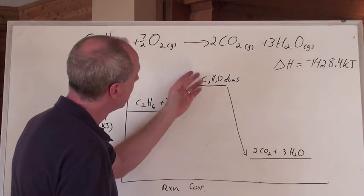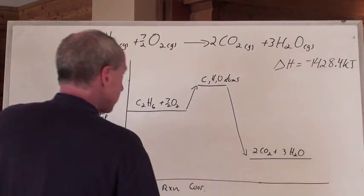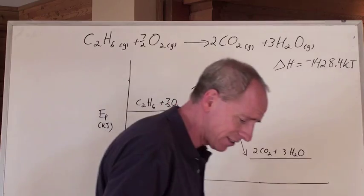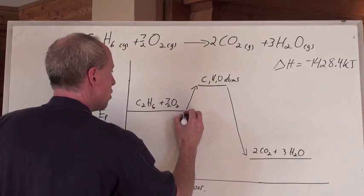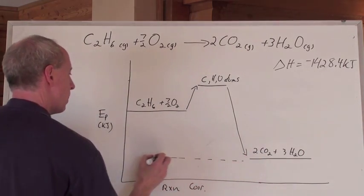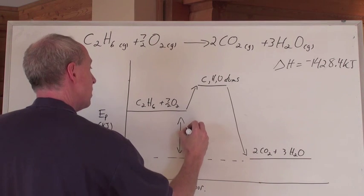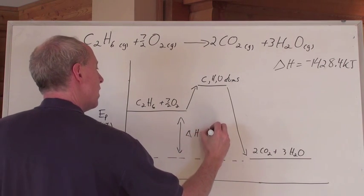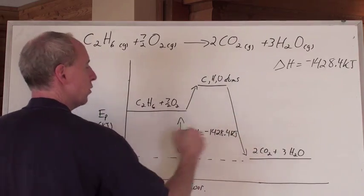We add energy. How much energy? A certain quantity of energy. And I'm not really even sure what this is necessarily here, and nor do I really care, because here's the deal. All I know is that the change from here to here, that, ladies and gentlemen, is the delta H of negative 1428.4 kilojoules.